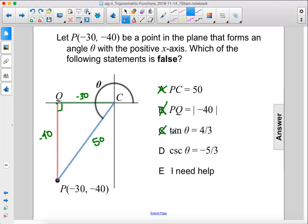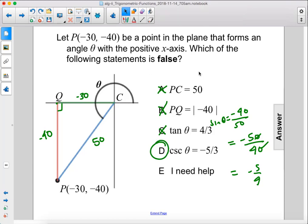Cosecant theta, alright, well what's sine theta? Sine is opposite over hypotenuse, which is negative 40 over 50, and that's sine theta. So the cosecant is the reciprocal of this, so that's going to be negative 50 over 40, which simplifies down to negative 5 over 4, which is not negative 5 over 3, so our answer is D.